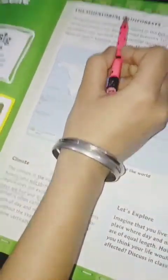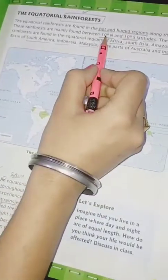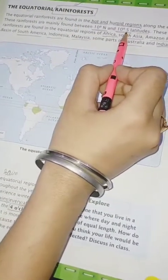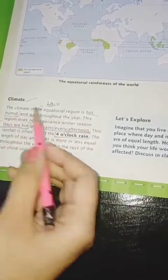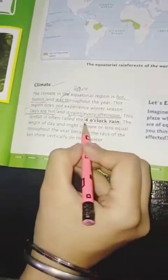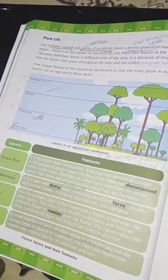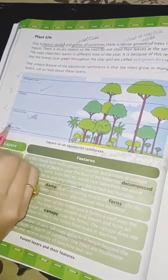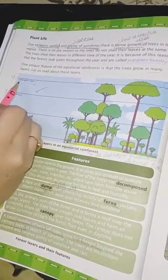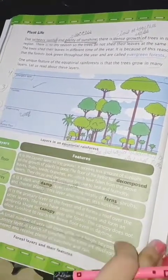So, to summarize: we have discussed about the tropical rainforest, which is quite hot and humid, found between 10 degrees north and 10 degrees south latitude. The climate is hot, humid, and wet, and the rain found there is the four o'clock rain. There are four layers of plant life: the first is the forest floor, the second is the understory, the third is the canopy, and the fourth is the emergent layer.